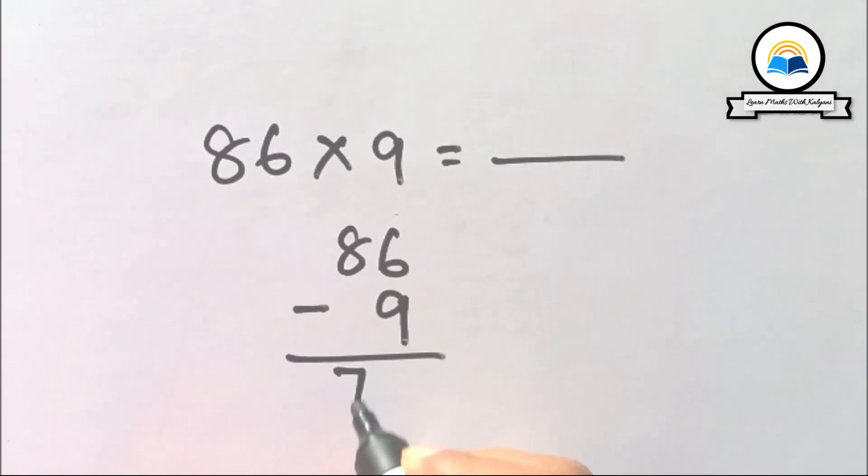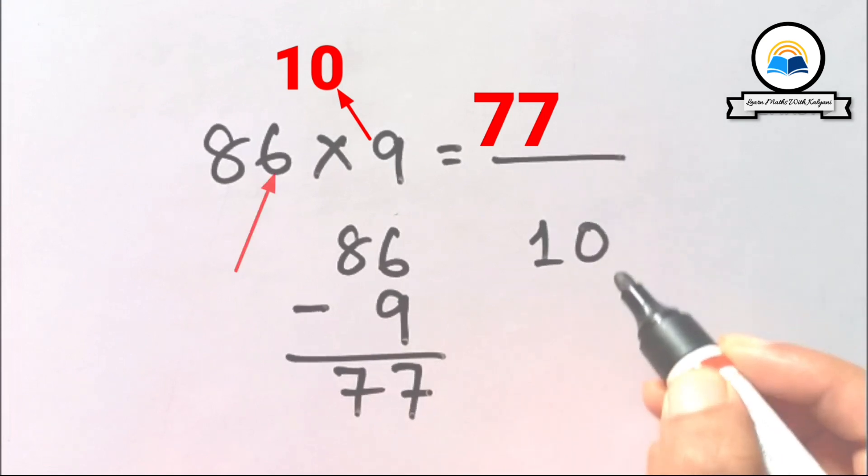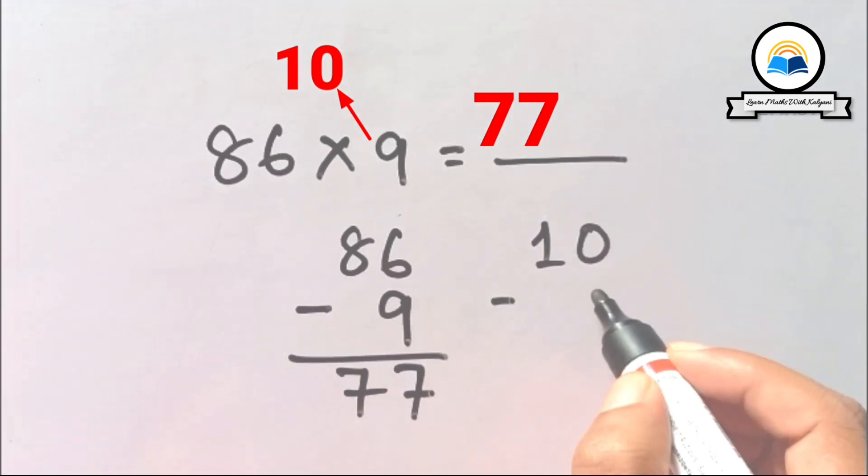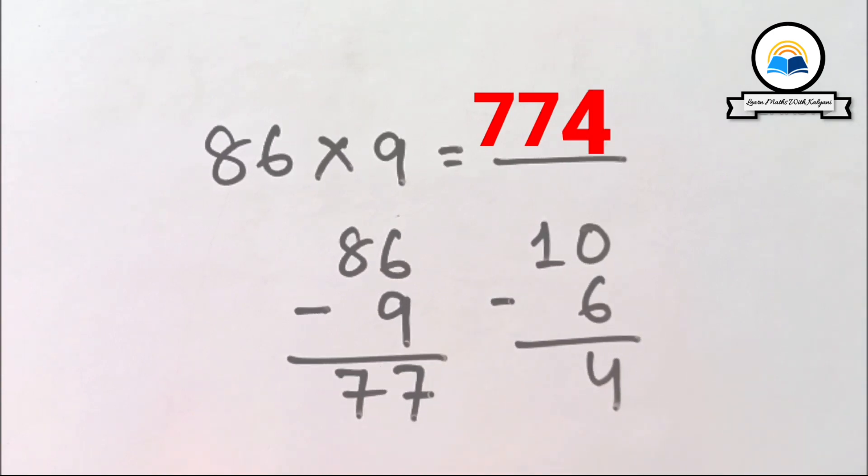Successor of 9 is 10. Subtract the ones digit, that is 6, from 10: 10 minus 6 equals 4. So the answer is 774.